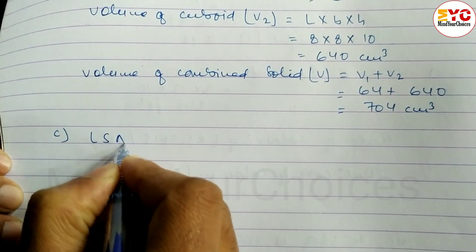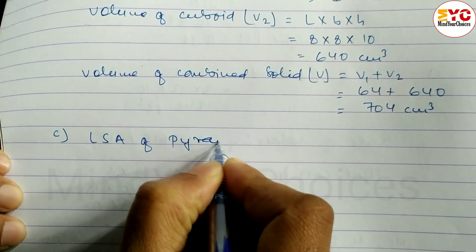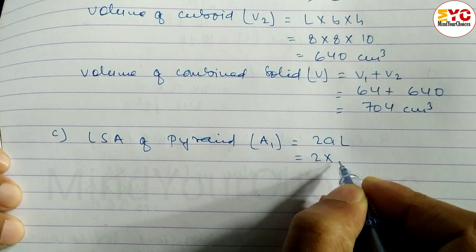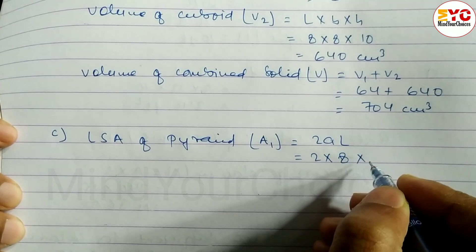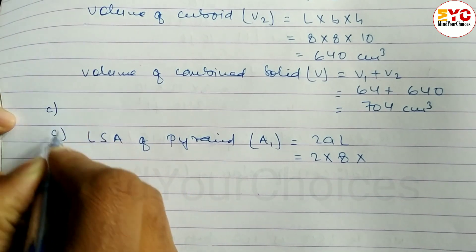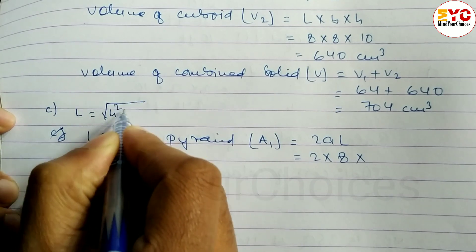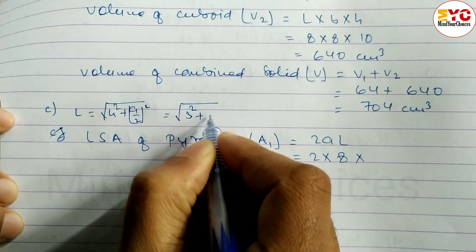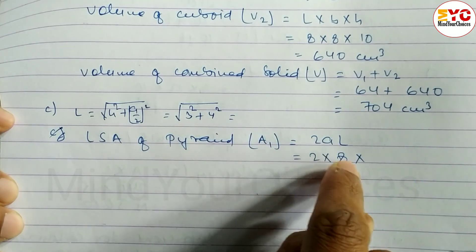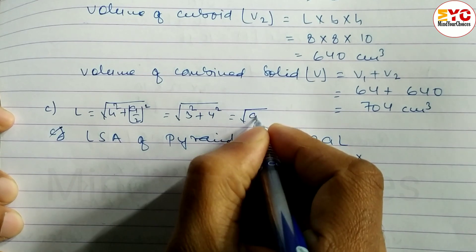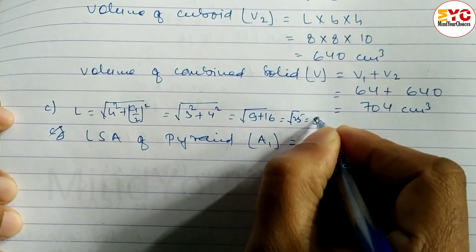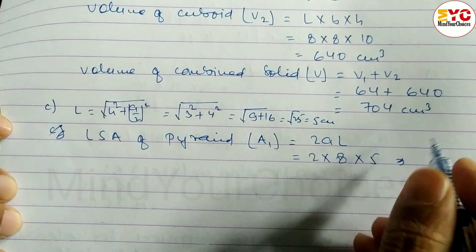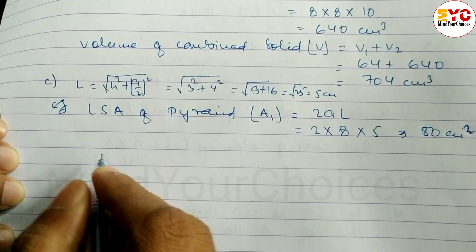Number C: Lateral surface area of pyramid, denoted A1 = 2aL, where a = 8 cm. We need to find the slant height L: L = √(h² + (a/2)²) = √(3² + 4²) = √(9 + 16) = √25 = 5 cm. So A1 = 2 × 8 × 5 = 80 cm².